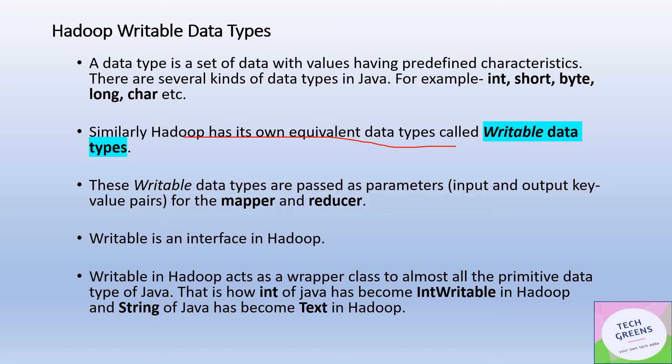These writable data types are passed as parameters — input and output key-value pairs — for the mapper and the reducer. Writable is an interface in the Hadoop world and it acts as a wrapper class to almost all the primitive data types provided in the Java world, since Hadoop is implemented in Java.